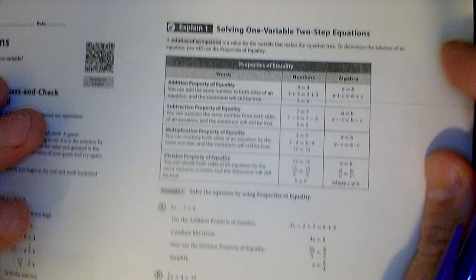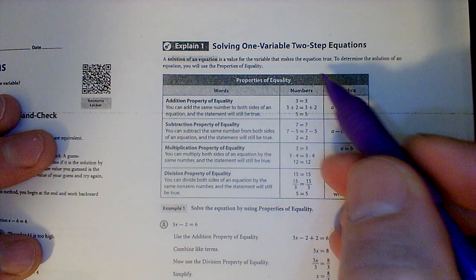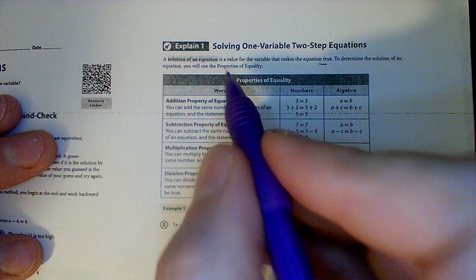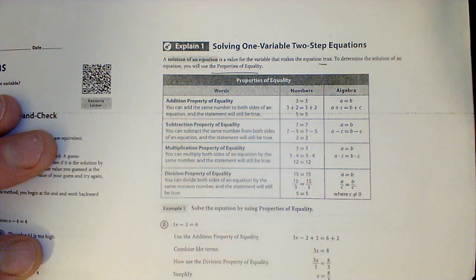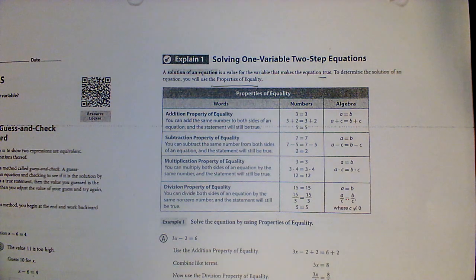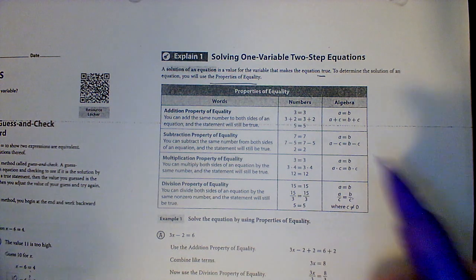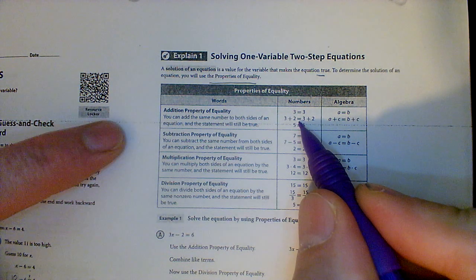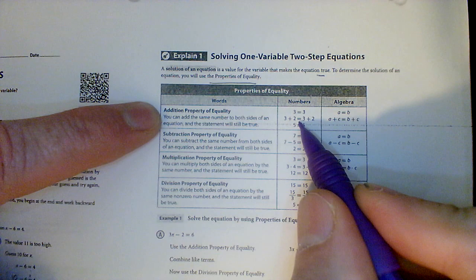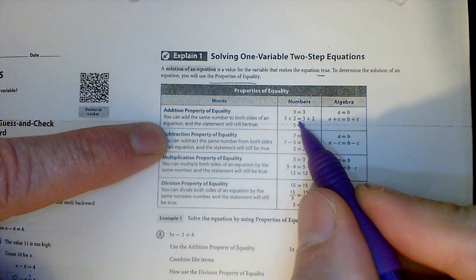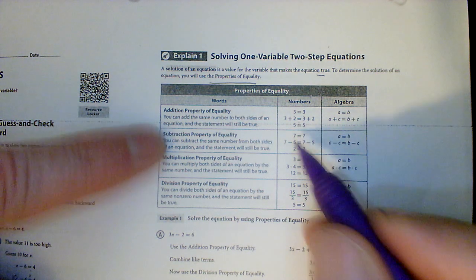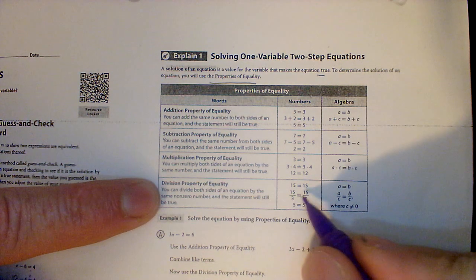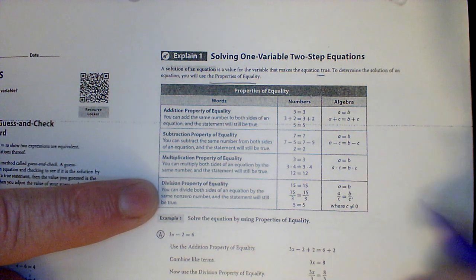So the solution of an equation is a value that makes the equation true. To determine the solution of an equation, we are going to use properties of equality. The concept of properties of equality is that we don't remove the equal sign if we can do these operations. As long as I add things to both sides, subtract things to both sides of the equal sign, multiply things to both sides of the equal sign, divide both sides of the equal sign by the same thing, it'll always be true.